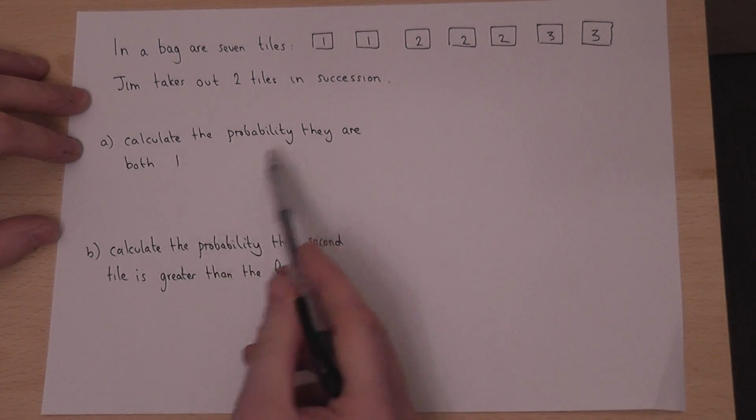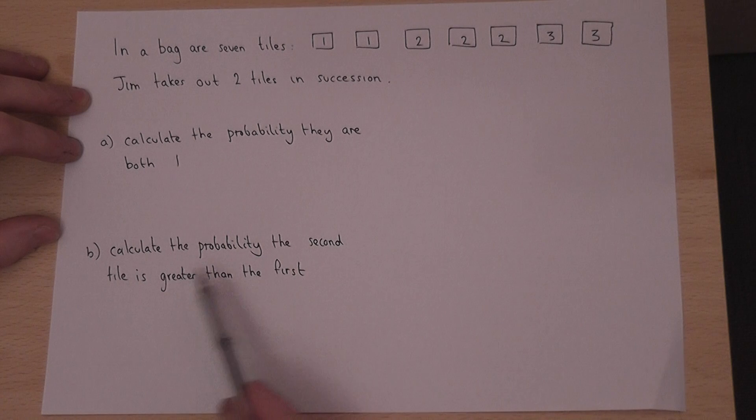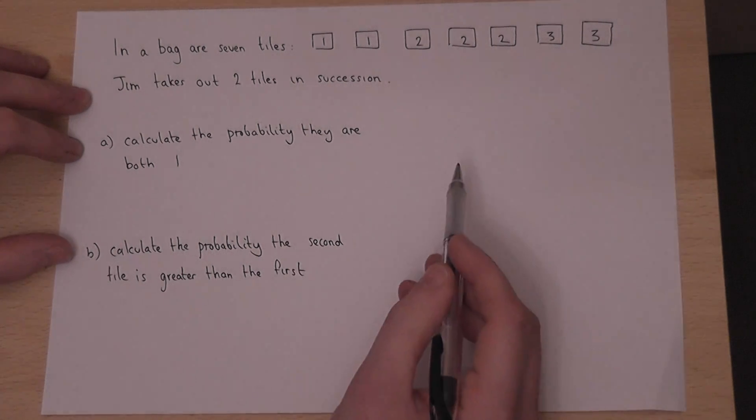What's the chance they are both one, and what's the chance that the second tile is greater than the first? Now I think the best way to solve this is through a tree diagram.